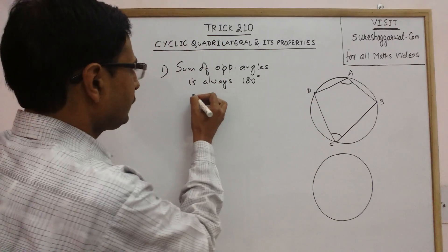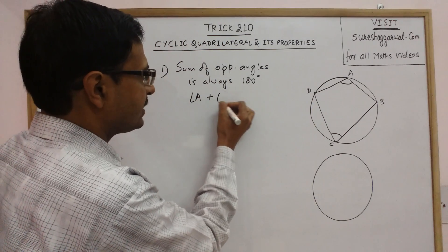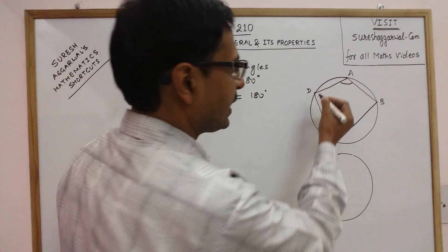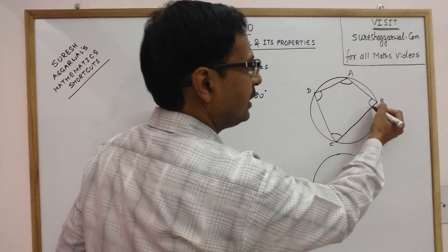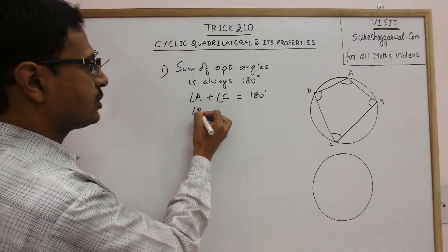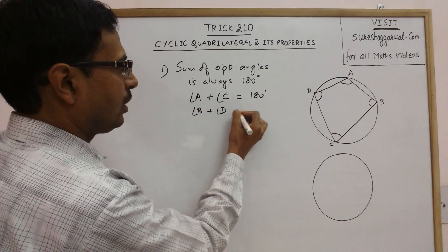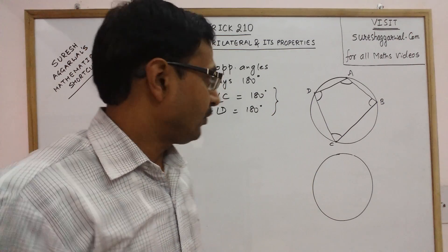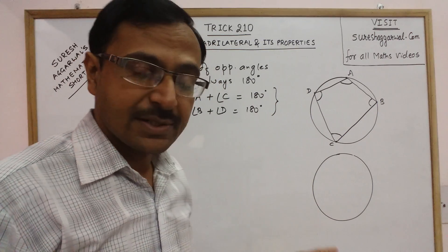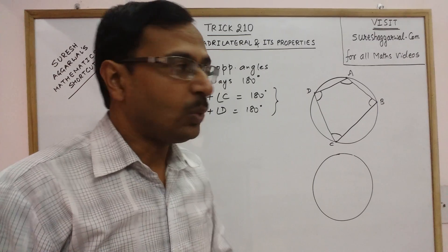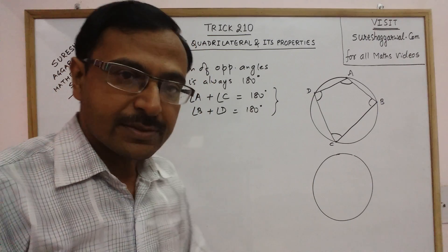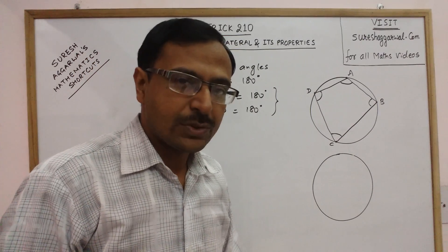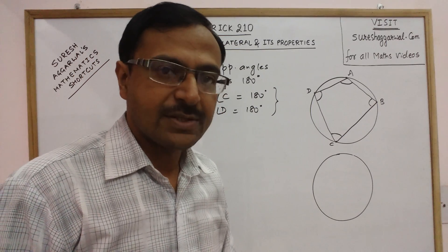So in this case, angle A plus angle C will add up to 180 degrees, and similarly the other pair of opposite angles, angle D and angle B, will also add up to 180 degrees. This is a very important property for students of class 9th and 10th learning this concept for the first time, and for all higher classes as well.